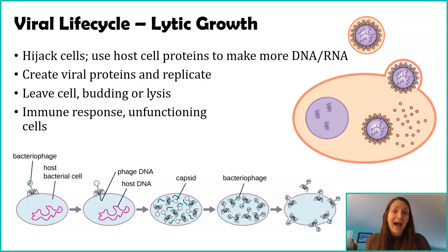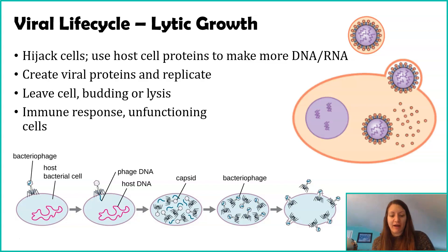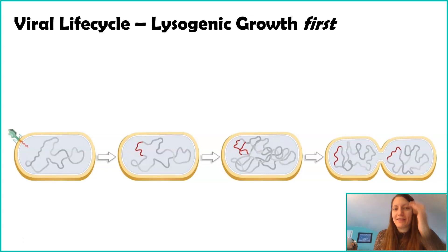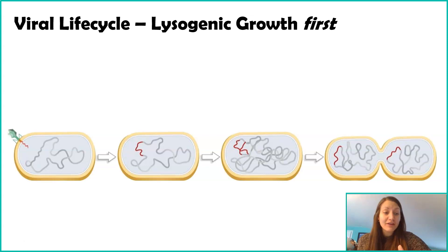So lytic growth is one type of growth we see with viruses. The other type of life cycle is called lysogenic growth. Lysogenic growth is part of the life cycle, but eventually it will turn into lytic growth — lysogenic happens first before activating into lytic.